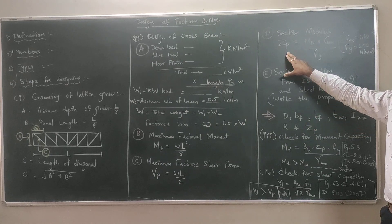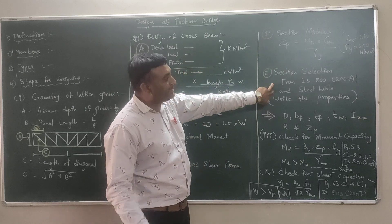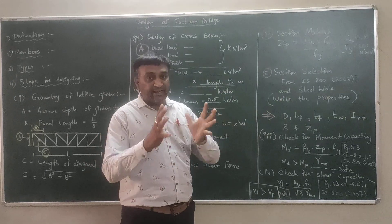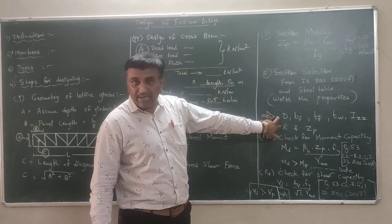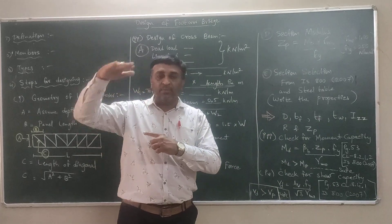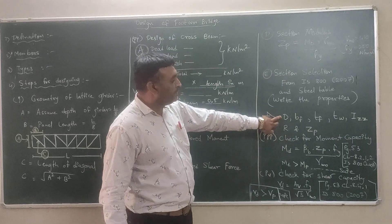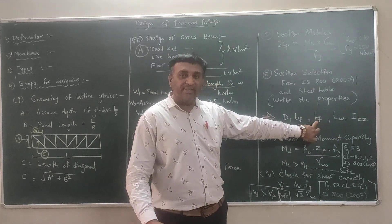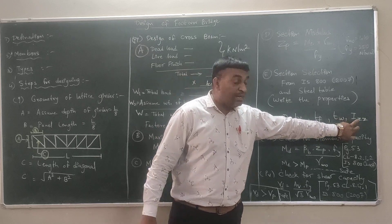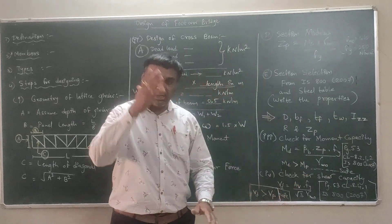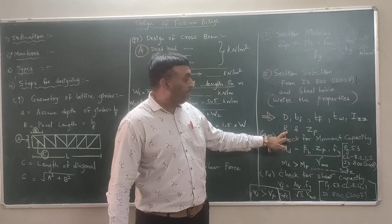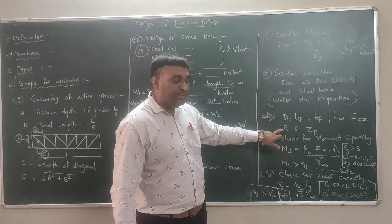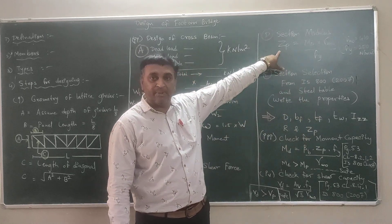From the steel table, note down the section properties: D (overall depth), BF (flange width), TF (thickness of flange), TW (thickness of web), IZZ (moment of inertia about Z-Z axis), R (root radius), and ZP (plastic section modulus of the selected section, which must be greater than the required ZP).